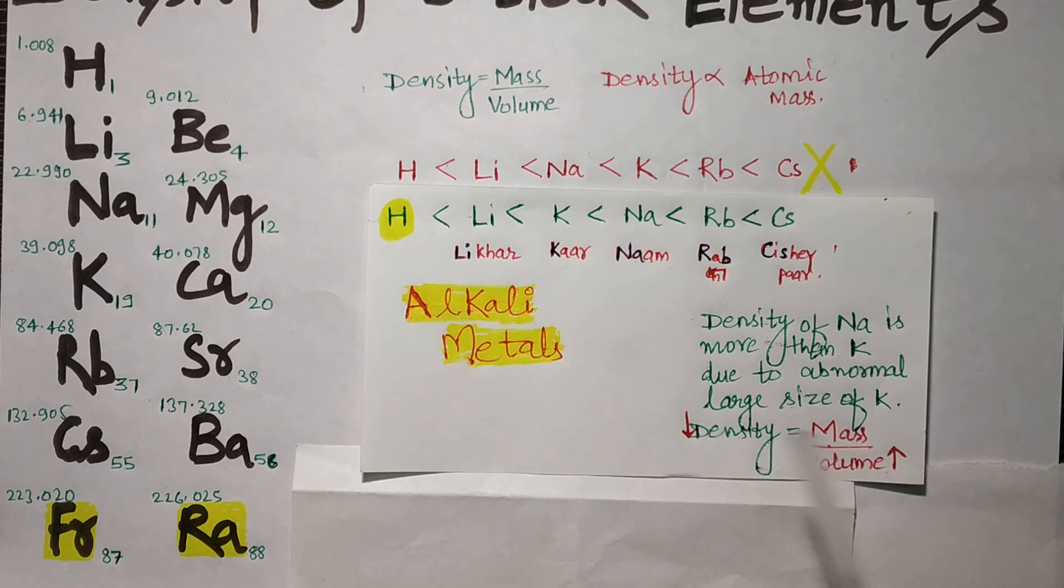If the size of potassium is bigger, then the density is less. So the density of potassium is less than sodium. So how do you remember that? The trick for alkali metals' density.